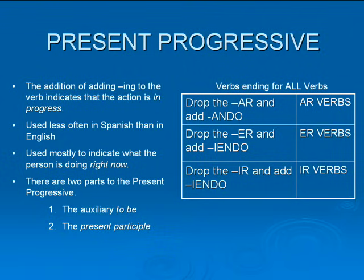The present progressive. It's used to indicate what the person is doing right now. You can easily spot it because it has an -ING in the sentence. So the verb endings are: for AR, you drop the AR and you add -ando, so it would be hablando. For ER and IR, you drop that and you add -iendo. So estoy bebiendo or viviendo — I am eating or I am living.